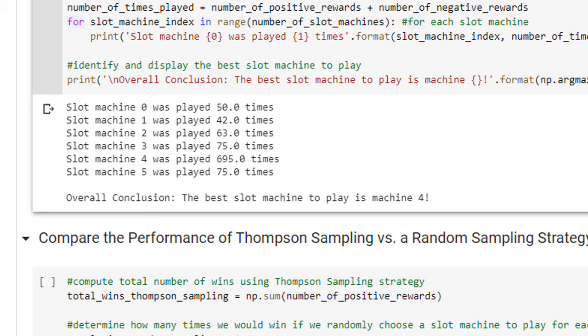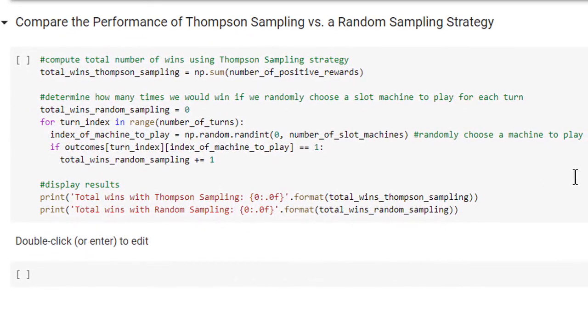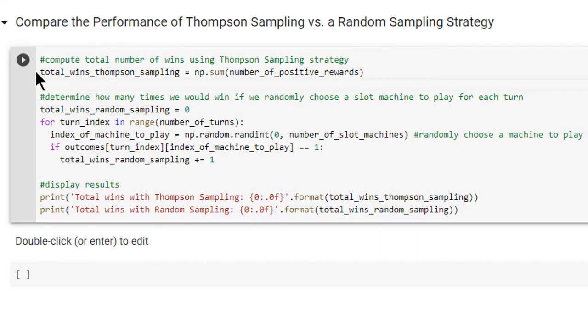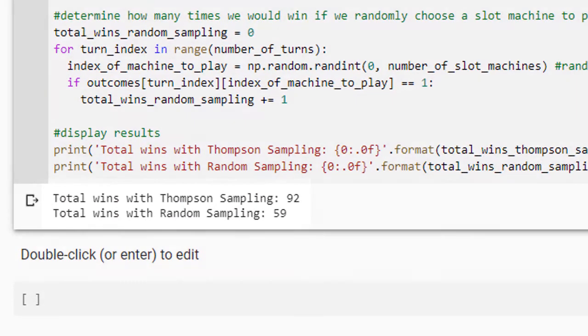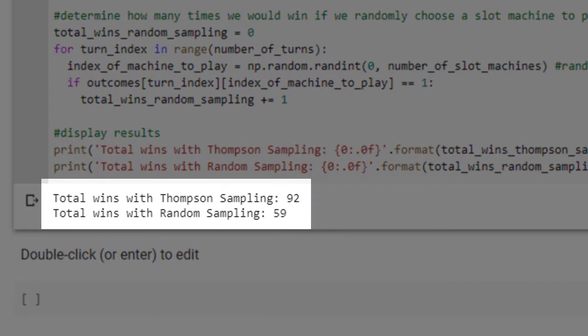Finally, it's always important to compare results such as these with a relevant baseline. In this case, the naive approach would be to just randomly choose a slot machine to play for each round. This last code cell does just that, by computing how many times we would win if we randomly chose a slot machine to play for each turn. Let's run the code cell and see how this random sampling approach compares to our Thompson sampling approach. As you can see, the Thompson sampling approach yielded many more wins than if we had just used a naive, random sampling approach. Our gambler would therefore be very wise to use Thompson sampling.